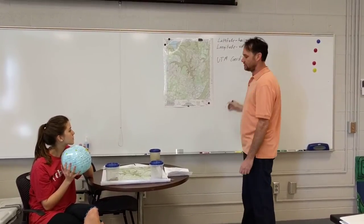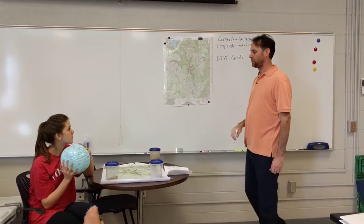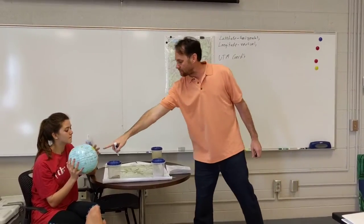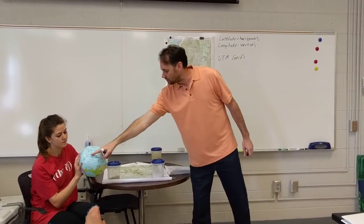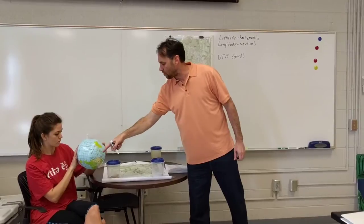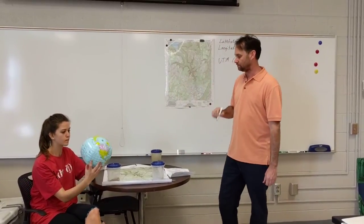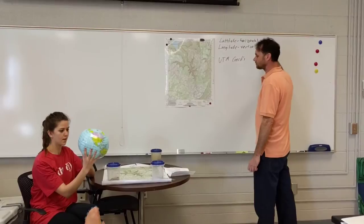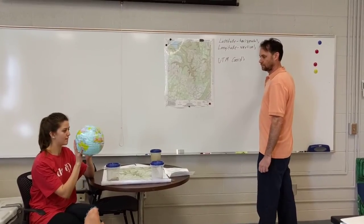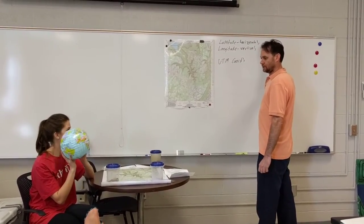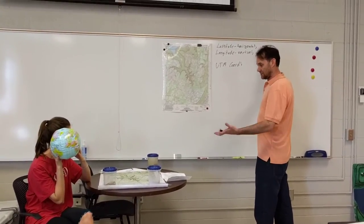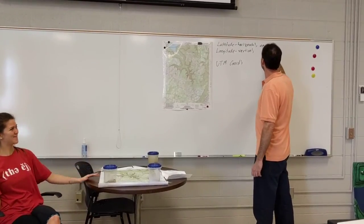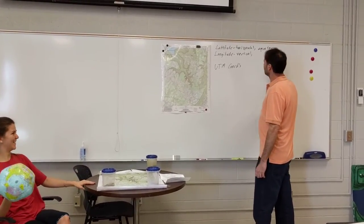What is the zero degree line for latitude? That is the absolute center of the Earth — it has one latitudinal line that runs around it. It has a special name. Equator is right.